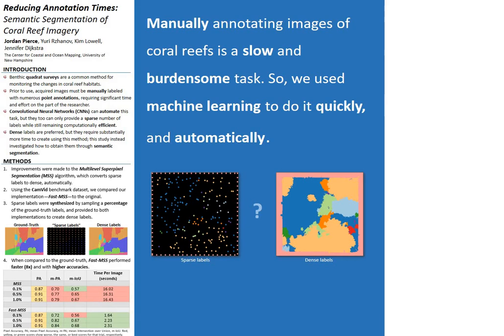As seen in the bottom half of the table, FastMSS performs eight times faster and with higher scores from mean pixel accuracy and mean intersection over union.